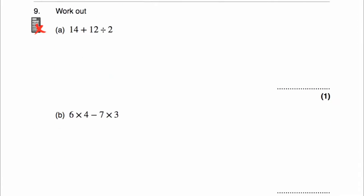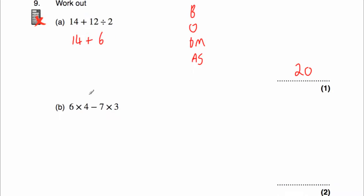Question 9a: work out 14 plus 12 divided by 2. No brackets, no orders; there is a division, so we do that first. 12 divided by 2 is 6. Then 14 plus 6 is 20.